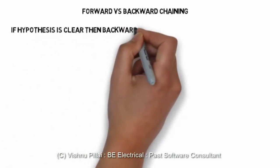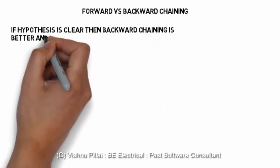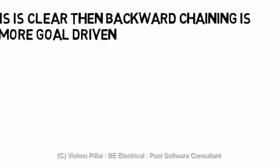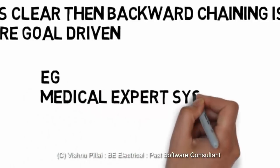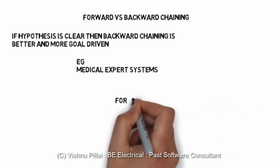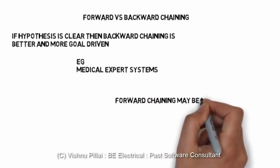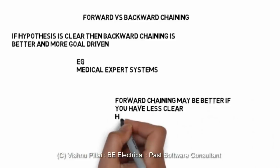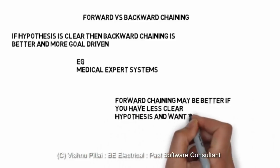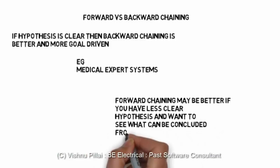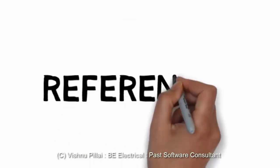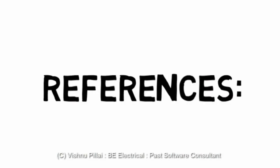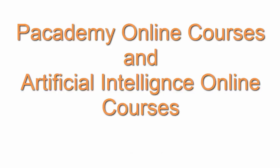If the hypothesis is clear, then backward chaining is better and more goal-driven. If your goal is very clear — that the system must always execute a specific action — then backward chaining is simpler and more clear. Forward chaining may be better if you have a less clear hypothesis and want to see what can be concluded from the current situation. These are the basic differences that enable a person to choose between forward chaining and backward chaining for an artificially intelligent system.